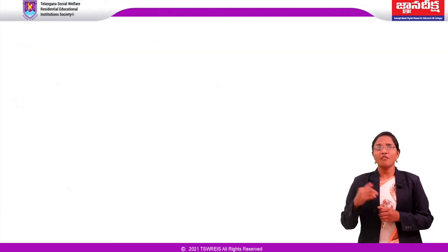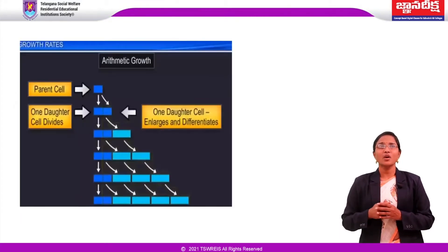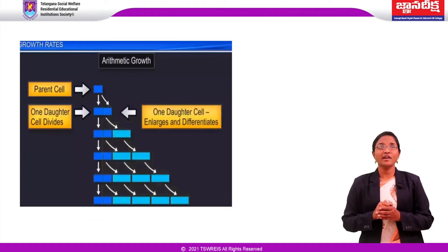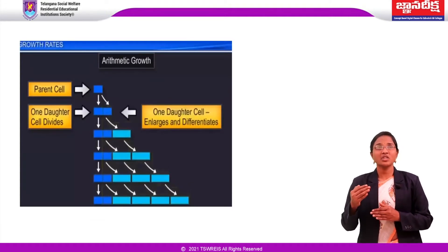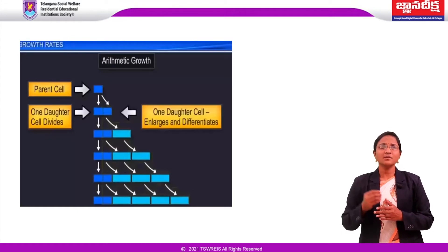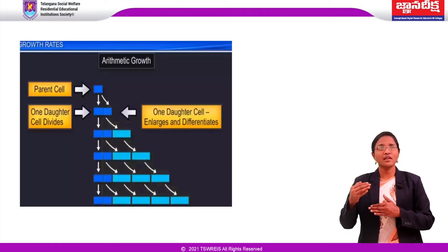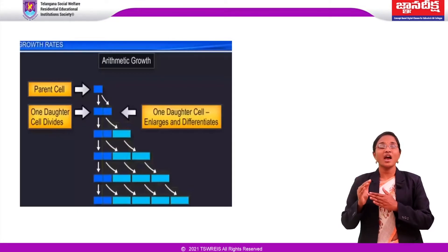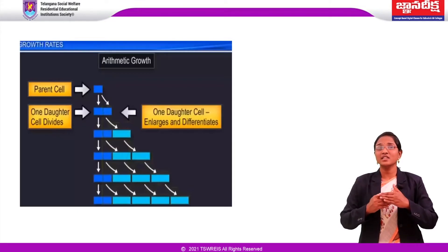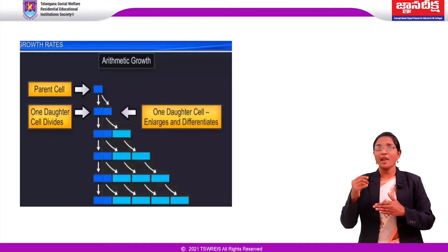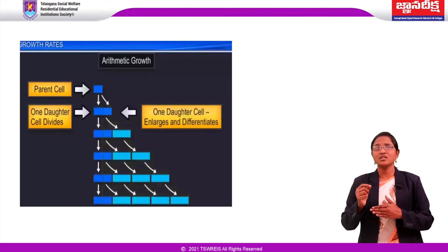In arithmetic growth, following mitotic cell division, only one daughter cell continues to divide while the other differentiates and matures. In arithmetic division, each division produces two cells: one cell becomes permanent and the other cell divides. For example, a plant root elongating at a constant rate.